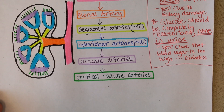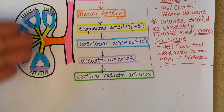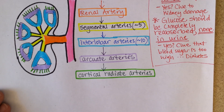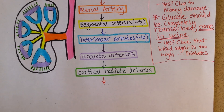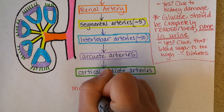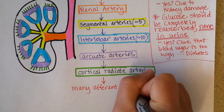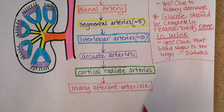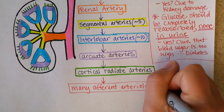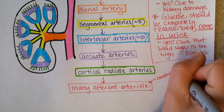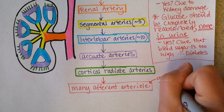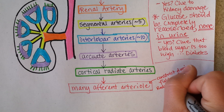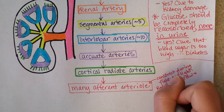Now we're at the microscopic level, which you can't see on the kidney — if you were to section a kidney, you could see many of those blood vessels, but after this they're too tiny. The cortical radiate arteries go to tiny arterioles. When you hear arteriole, you should think blood pressure regulation. They are key for regulating blood pressure systemically. During fight or flight, these will constrict, which will reduce blood flow and filtering in the kidney, and systemically it will raise blood pressure.